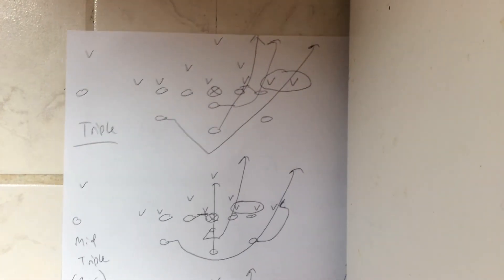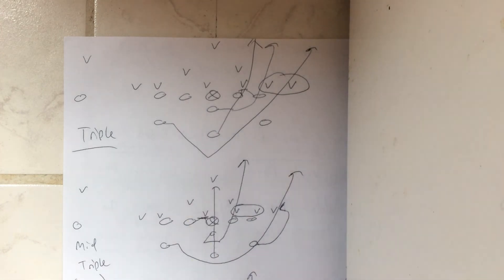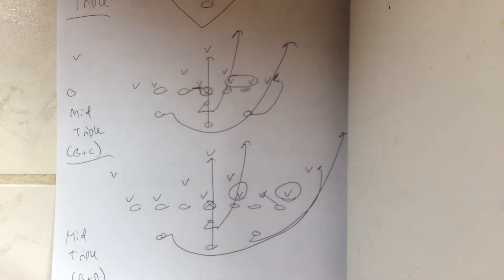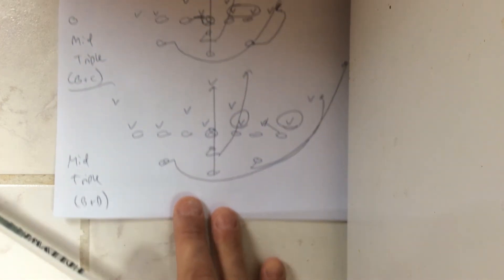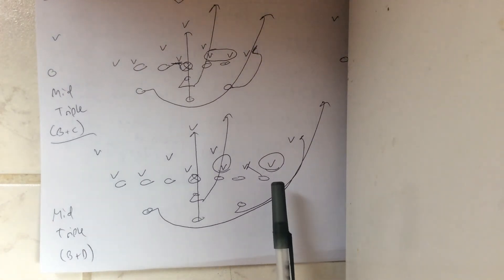So there's three ways to run a triple option. This is the most common and proven to be the most effective by far, you block the B-gap defender and you read the C and D-gap defender. You can block the D-gap defender, but read the B and C-gap defender. Or you can compress the formation and bring a third guy into the surface, crush the C-gap defender, and read the B and D-gap defender.